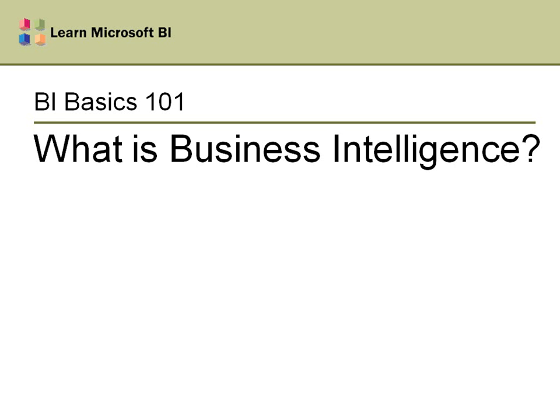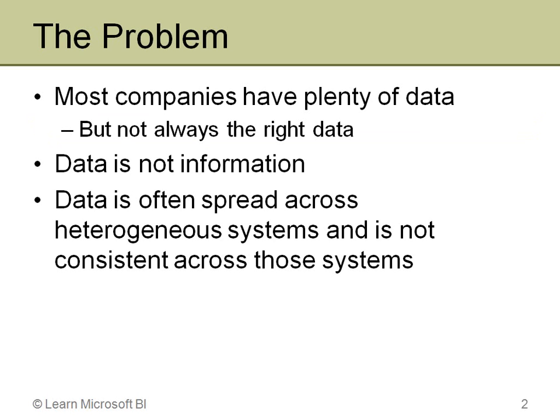The first thing to do is look at the problem that exists — the problem companies use business intelligence to try to solve. Most companies actually have a lot of data. In fact, a study back around 2000 showed that most companies are doubling the amount of storage they have every 12 to 18 months. So companies have a wealth of data stored in various places, but one of the problems is it may not be the right data.